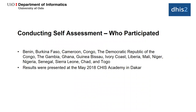These 17 countries all conducted the assessment in early 2018, and quite a lot of progress has been made since then, with some countries having done the assessment more than once. They presented results at a community health information system academy — a large regional training for Western and Central Africa held in Dakar in May of last year. Over the last year we poured through those results and wrote a journal article that will be published in the Journal of Global Health in the next couple of weeks — a peer-reviewed publication of the results.